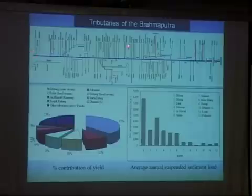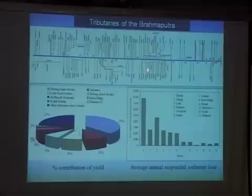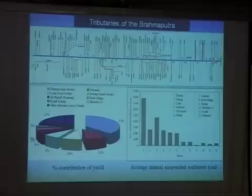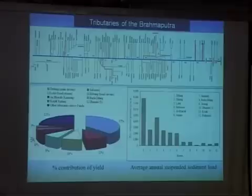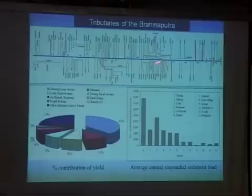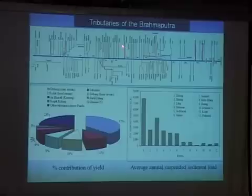Within Assam alone, there are tributaries — many of them, like Dibang or Subansiri — that are much bigger in terms of discharge than Mahanadi, Godavari, or Kaveri. So these are big rivers. Only thing is that eventually they all join the Brahmaputra, and the Brahmaputra becomes a real integrator of all those rivers. But they themselves are pretty big rivers.